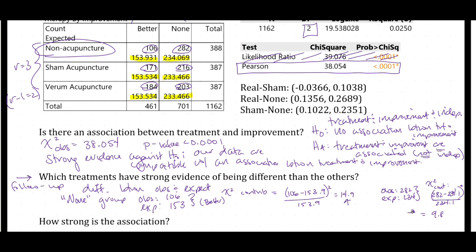The non-acupuncture row is the largest contribution to the chi-squared statistic — the largest difference between observed and expected. Everywhere else, sham acupuncture and verum acupuncture are much closer to what we would expect. If we look at the pairwise intervals — and note, you cannot get these intervals from JMP, I got them from different software — the differences between real versus none, and real versus sham, are what are different from zero.